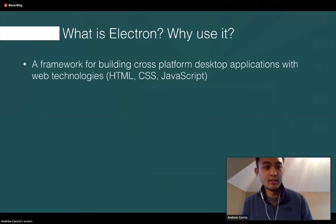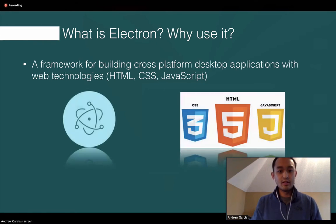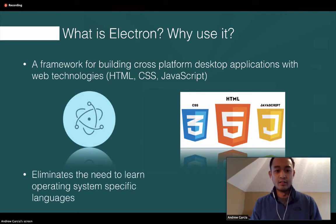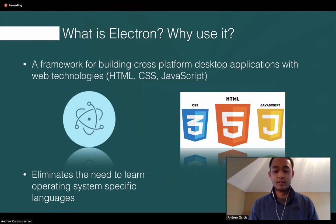So what is Electron? It's a framework for building cross-platform desktop applications with web technologies — that means HTML, CSS, and JavaScript. And why is this novel? Why would we use this? Well, it eliminates the need to learn specific operating system languages. On Windows you might have to learn a specific language and all the nuances that go with that, and the same goes with a Mac operating system or Linux.